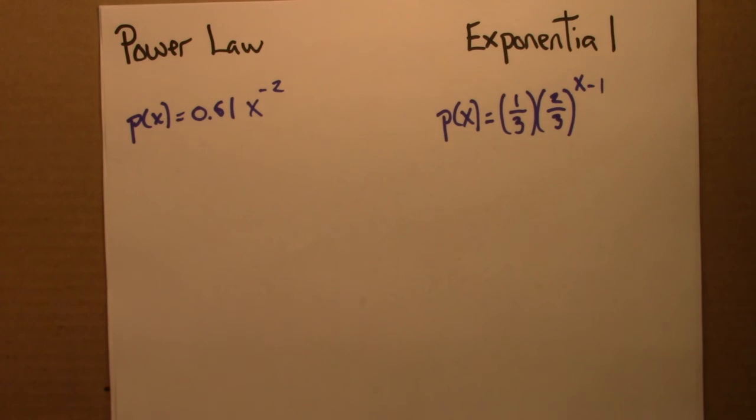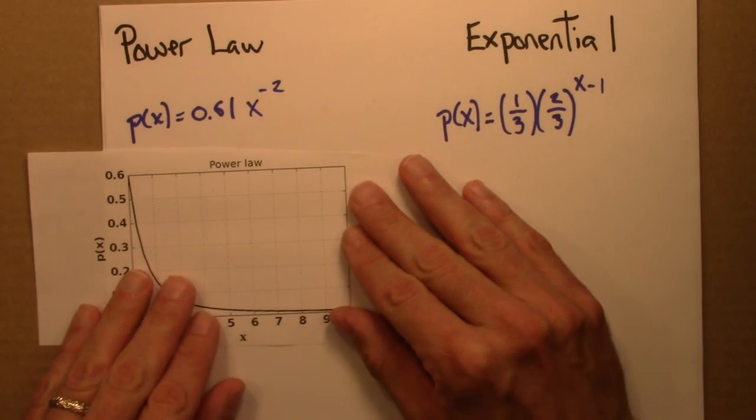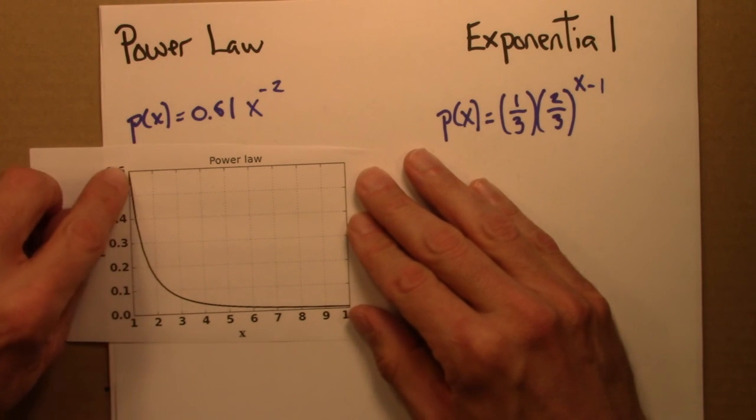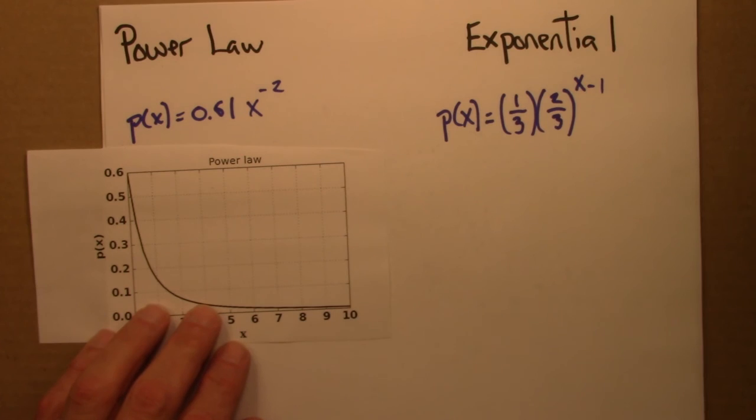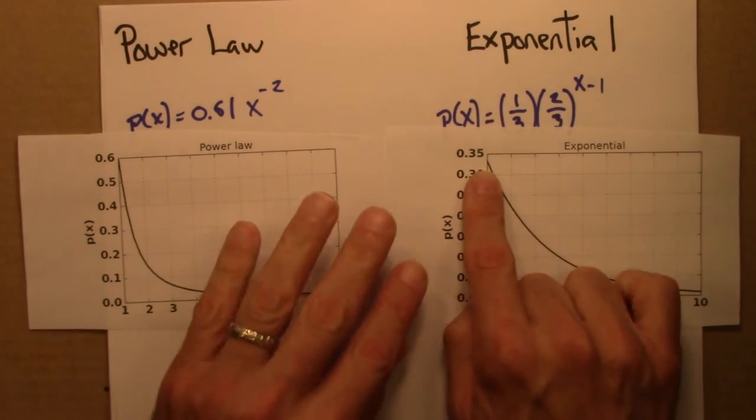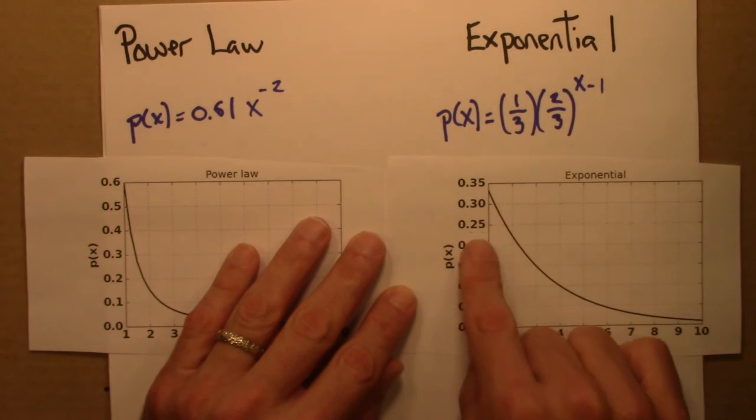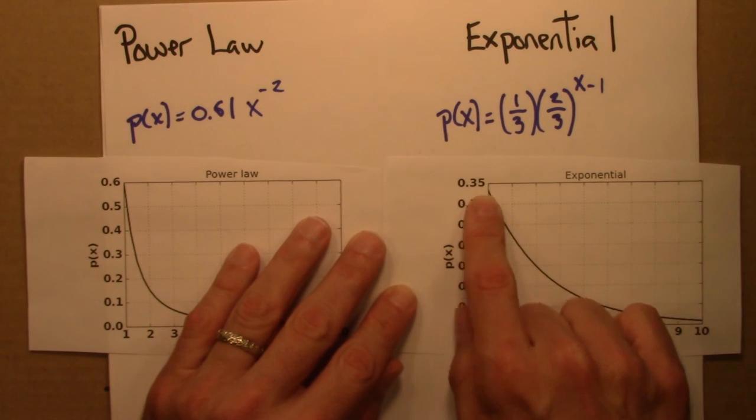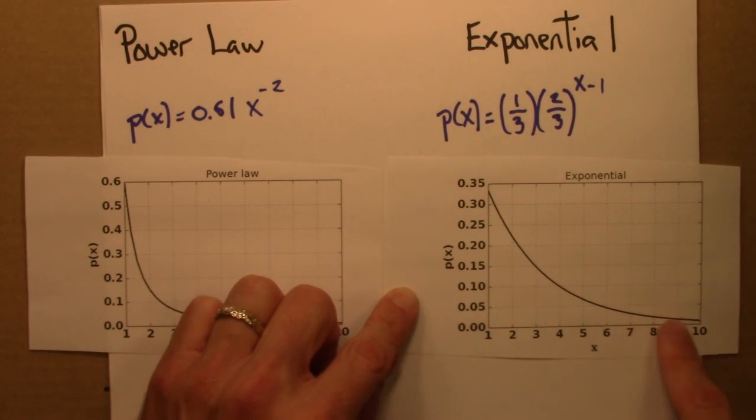Alright, so let's see what these distributions look like. And we've looked at them before. So here's the power law. It starts off at 0.6. It goes down. And here is the exponential. It starts at 0.33. There's a 33% chance, a 1 in 3 chance that I'm successful on my first toss, like it was a moment ago. And then this also decays quickly.